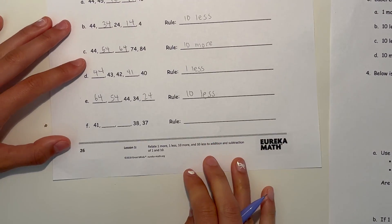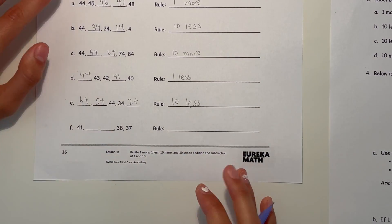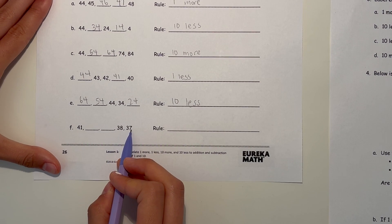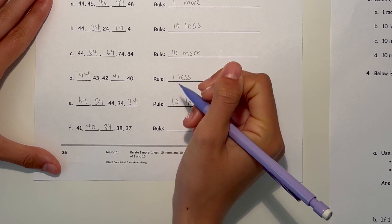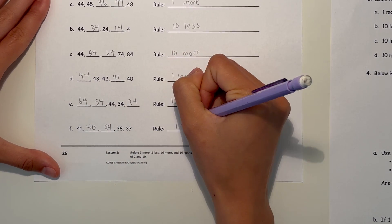And F. We have 41, but you see it went from 30 to 37, so I think this is 40, 39, 38, 37. So the rule is 1 less.